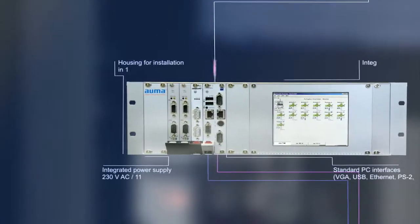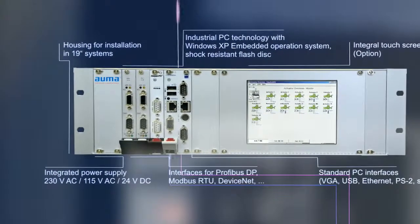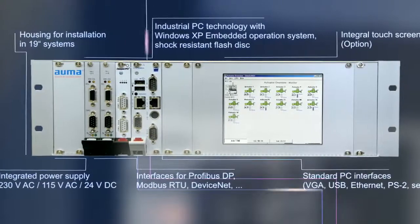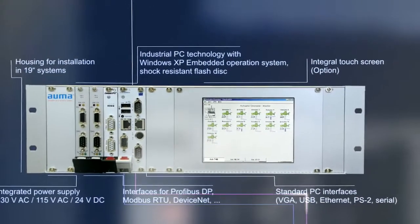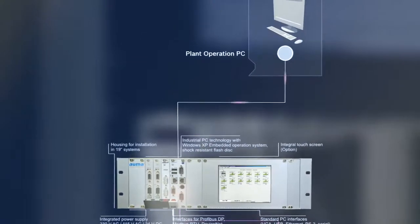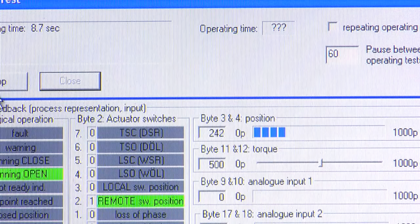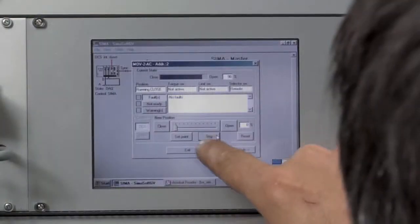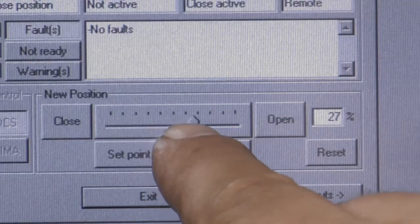They optimize the data transmission and work as protocol converters. In this application, the CIMA also acts as data concentrator. Only respectively required data is transmitted to the superordinate DCS. This way the DCS can focus on other tasks. Thanks to this AOMA technology, parts of the plant can be retrofitted, put into service and tested without requiring the connection to the superordinate DCS.